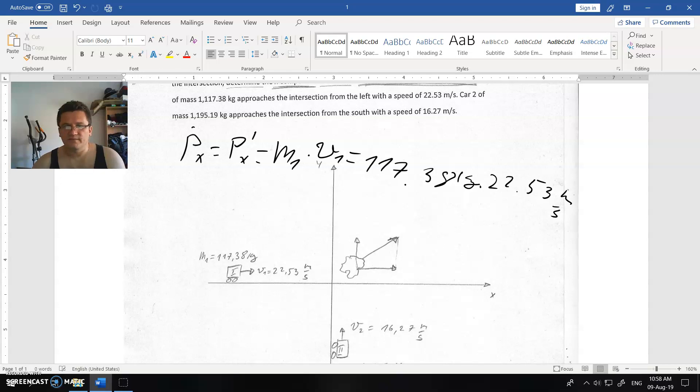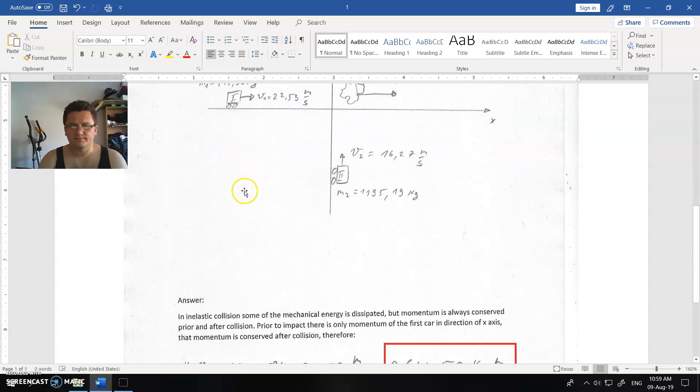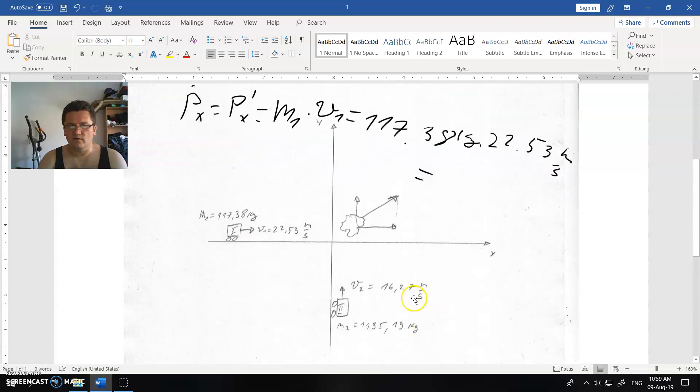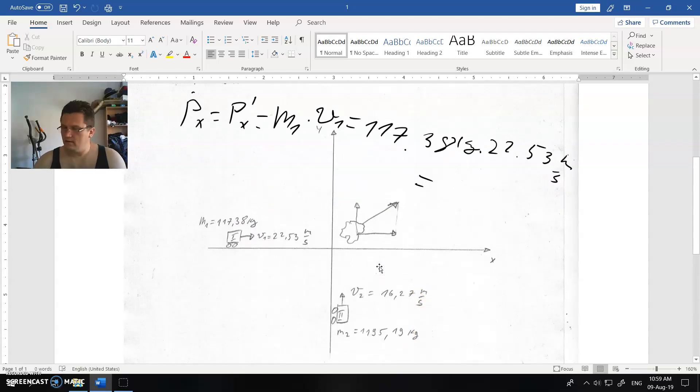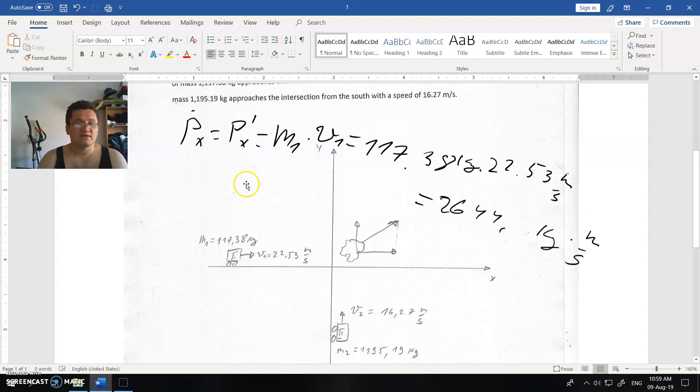I will get 2644 kilograms meter per second. That is the answer to this question. You have the algorithm written here. That is the answer for this question in this assignment.